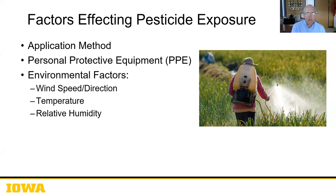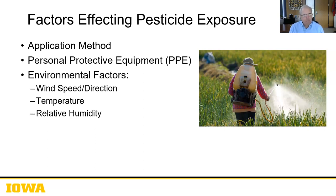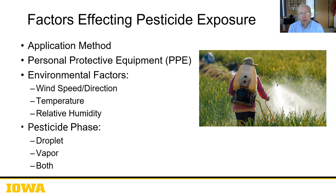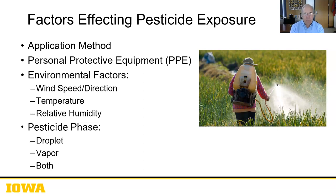Environmental factors: this is all being done outdoors, primarily. The big factor here is wind — its speed and direction relative to the wand and the spray. Temperature: the higher the temperature, the more the compound will vaporize. Relative humidity can also affect vaporization of the pesticide. This gets into the concept of the different phases of the pesticide: it's sprayed as a droplet but can also form a vapor, and we need to assess both to have a proper exposure assessment of applicators.